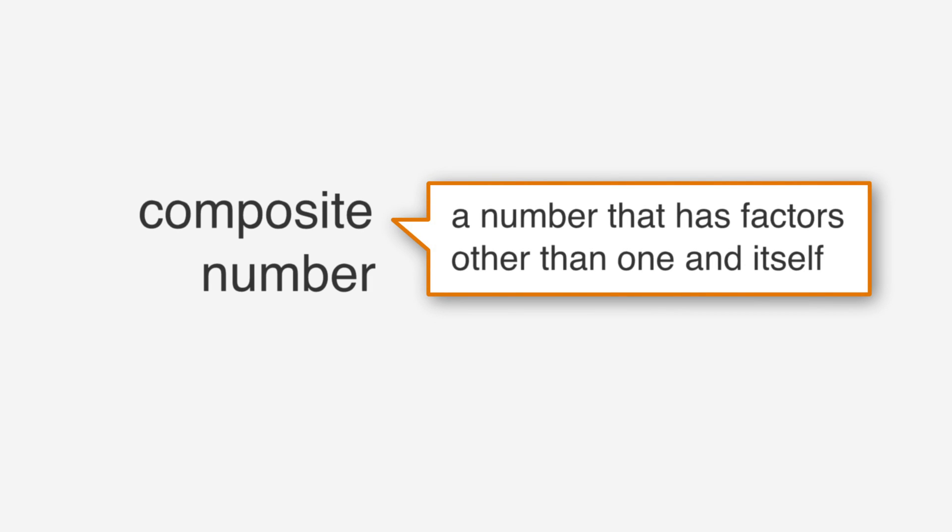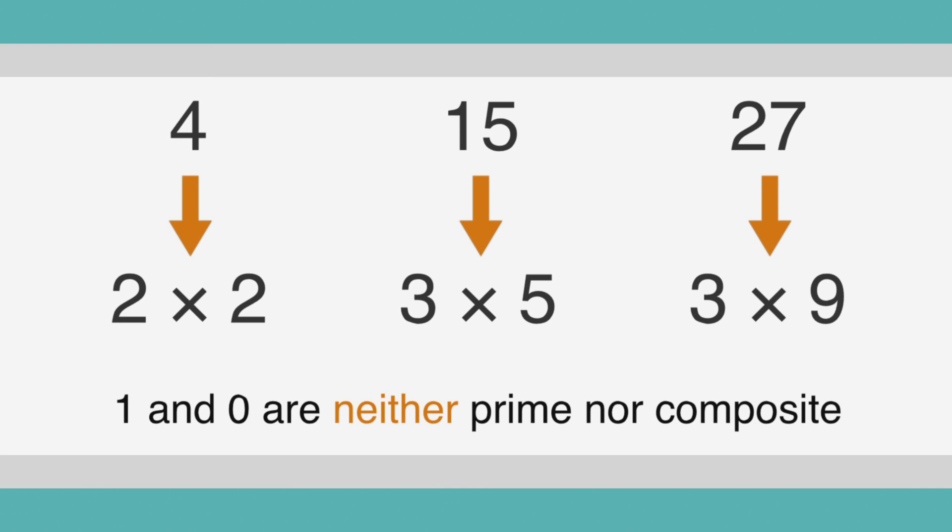Now what about numbers that aren't prime? A composite number is one that has factors other than 1 and itself. Some examples are 4 with 2 factors of 2, 15 with factors of 3 and 5, and 27 with factors of 3 and 9. The numbers 1 and 0 are special numbers, which are neither prime nor composite. Keep in mind that 0 can never be a factor because any number divided by 0 is undefined.